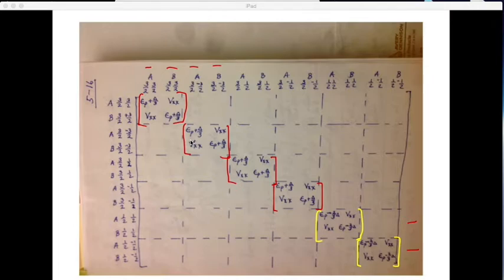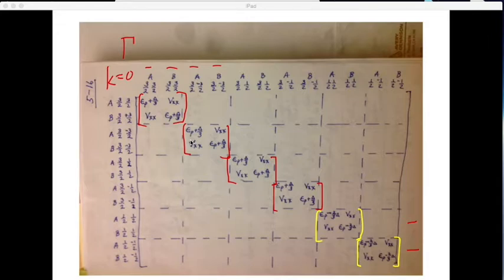This simple form is only true for K equals zero — right at gamma. This is the only time it gets so simple. Otherwise, you get a lot more matrix elements. This is what we spent a long time getting to, to understand what spin-orbit coupling does.